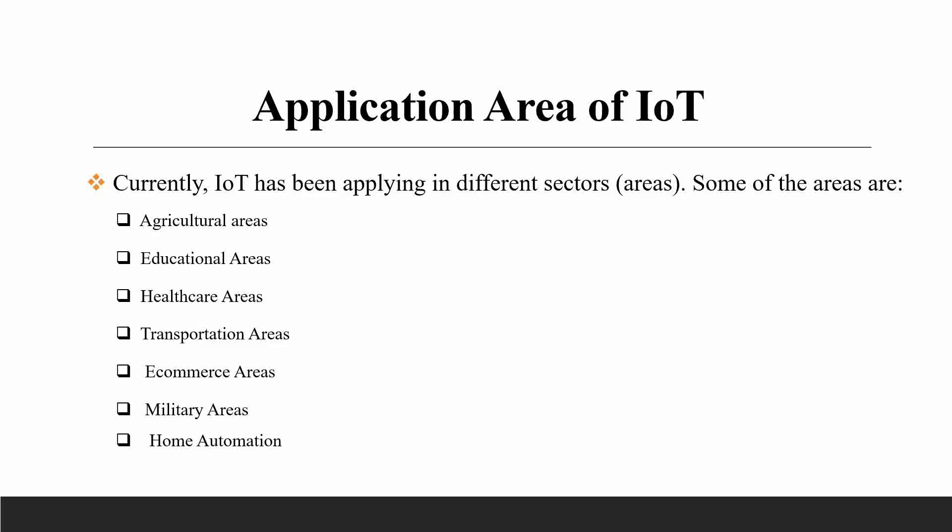There are applications of IoT in many areas. Just like other emerging technologies like artificial intelligence and data science, IoT also plays a great role in different areas — including agriculture, education, healthcare, transportation, commerce, military, and home automation — with the help of different sensors.